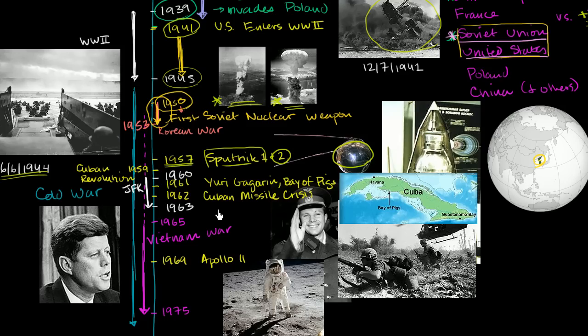At the same time, in 1960, you have John F. Kennedy being elected — right in the heart of the Cold War. He was the first Catholic president, which was notable in itself. It was a very short presidency; he actually became president in 1961 and was assassinated in 1963, but a lot happened in that short time.